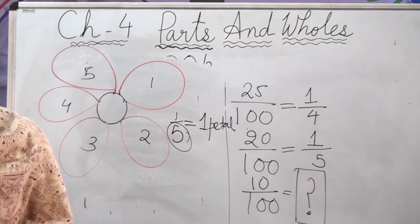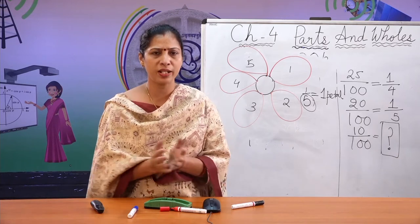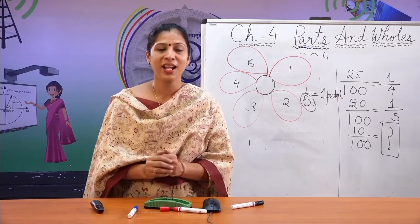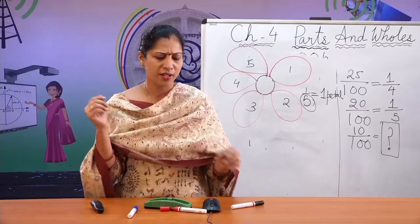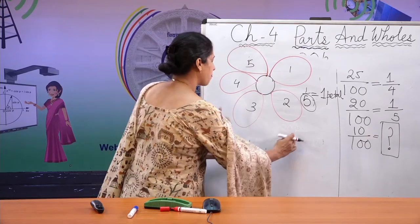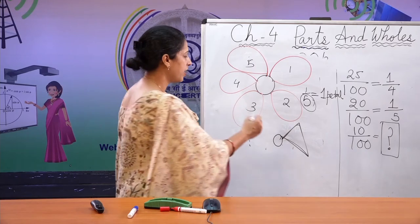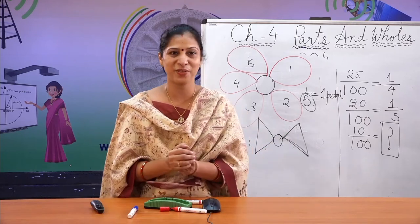Similarly, in picture 2, the picture shows 1/3rd of the blade of a fan. So complete the picture by drawing the other blades. You know that if 1/3 is 1, then the whole will be 3 parts. Also, half of the blades of another fan is shown — if half is drawn, can you draw the other half? Yes, exactly like that. Now can you draw the other half of the fan? Yes, you can do it.